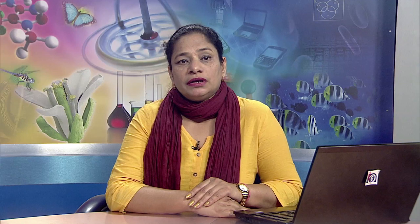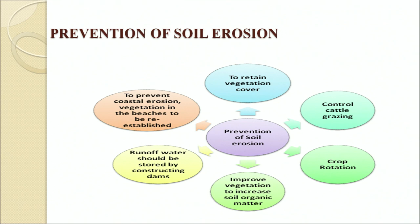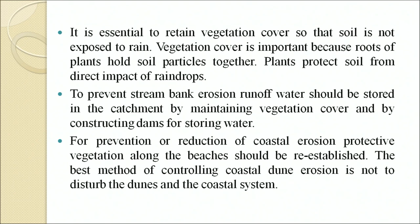Removal of seeds reduces the ability of soil to store water. Landslides also inhibit farm production and land use, and can cause mortality in animals and humans. For prevention of soil erosion, vegetation cover is important because roots of plants hold soil particles together. To prevent stream bank erosion, runoff water should be stored in the catchment by maintaining vegetation cover and by constructing dams for storing water. For prevention or reduction of coastal erosion, protective vegetation along beaches should be re-established, and the best method of controlling coastal dune erosion is not to disturb the dunes and coastal system.